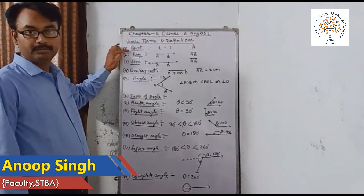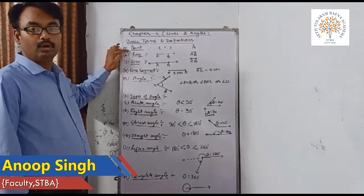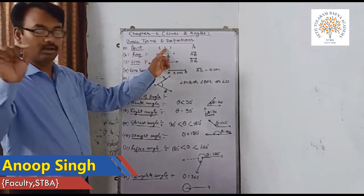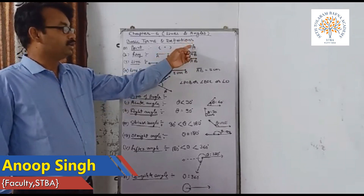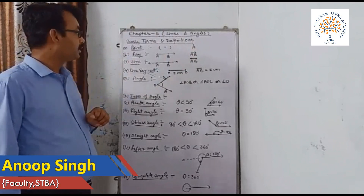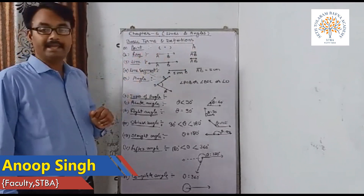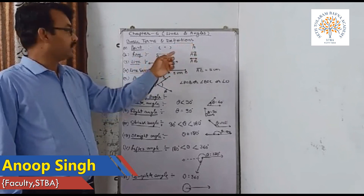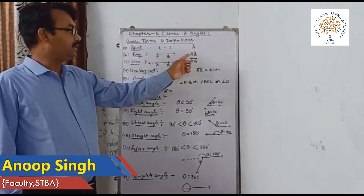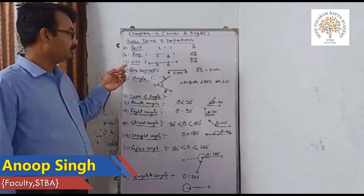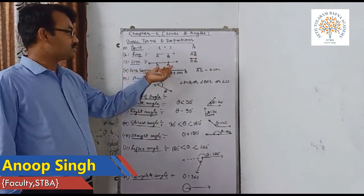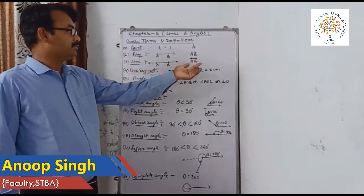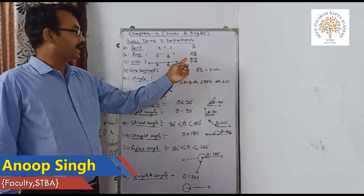Here we are discussing the basic terms and definitions regarding lines and angles. A point has no length, width, or height — we denote a point as a dot, like dot A. A ray is a part of a line which has one endpoint and goes in one direction; we denote it as AB with an arrow mark in one direction. A line has two endpoints and goes infinitely in both directions; we denote it as AB with arrow marks on both ends.